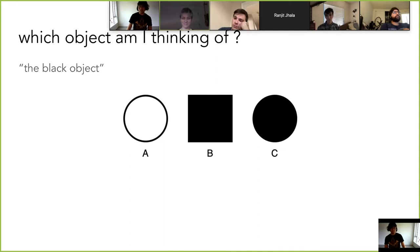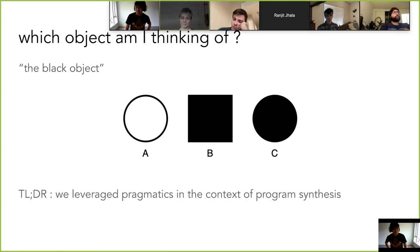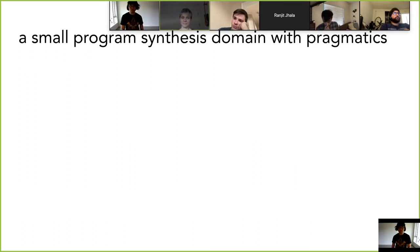Why is that? Because if I were to refer to object B, I would have said 'the square object.' These kinds of pragmatic inferences go a step beyond what you just told me — I also thought about what you didn't tell me. From the knowledge of what you didn't tell me, I can disambiguate. I disambiguate two objects by thinking: you didn't say 'square,' so it must be C. The high-level message of this talk is we leverage these kinds of reasoning in the context of program synthesis.